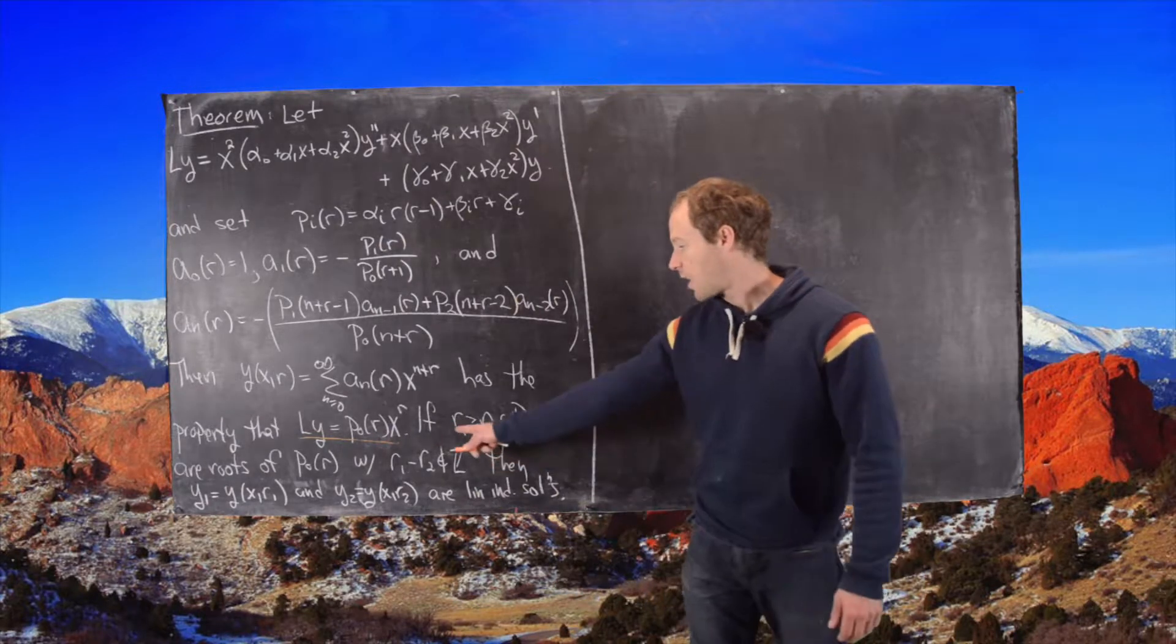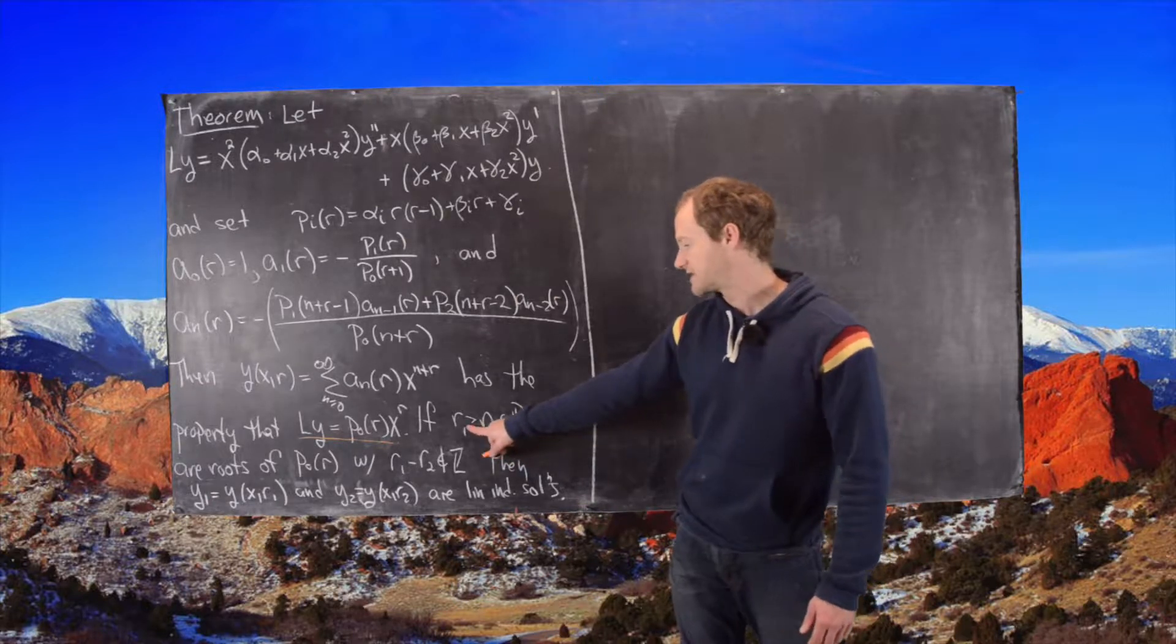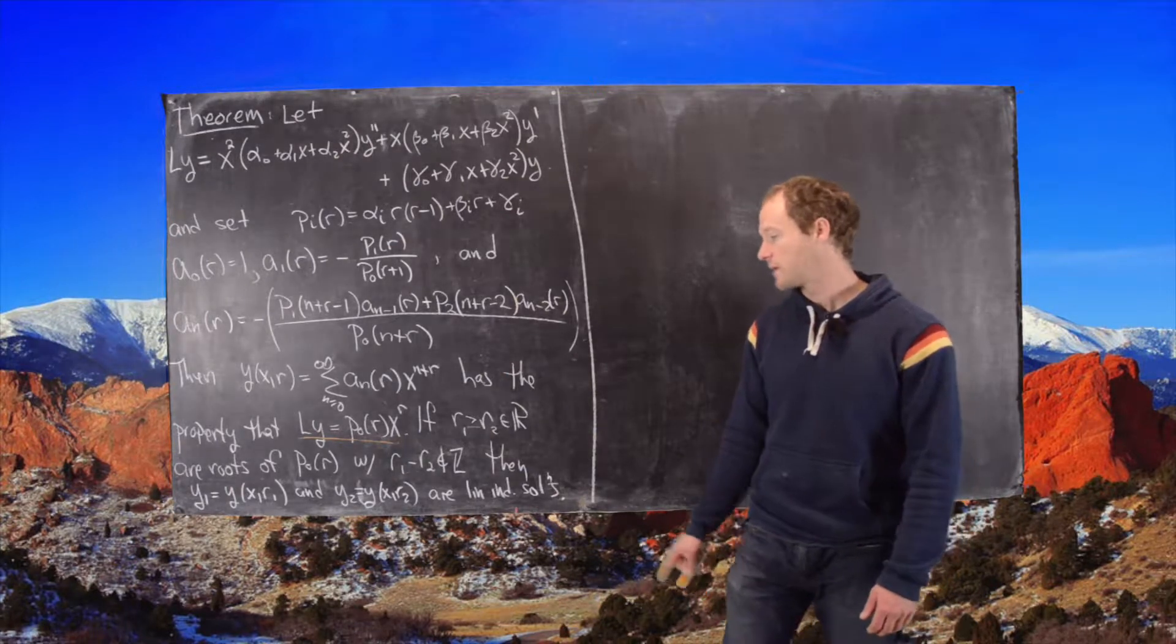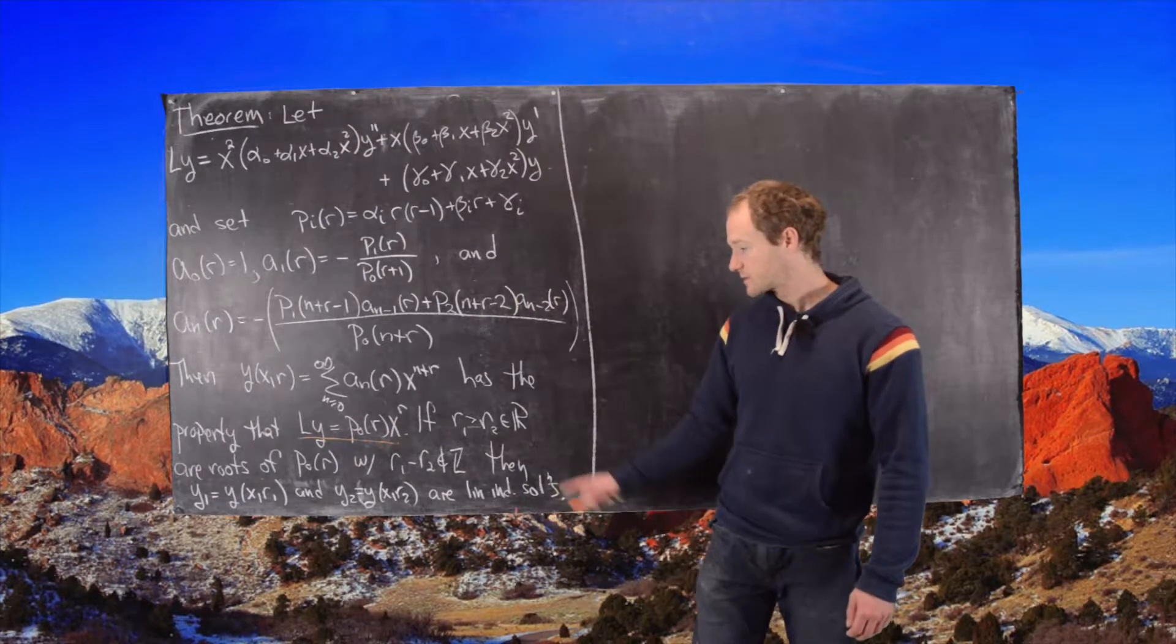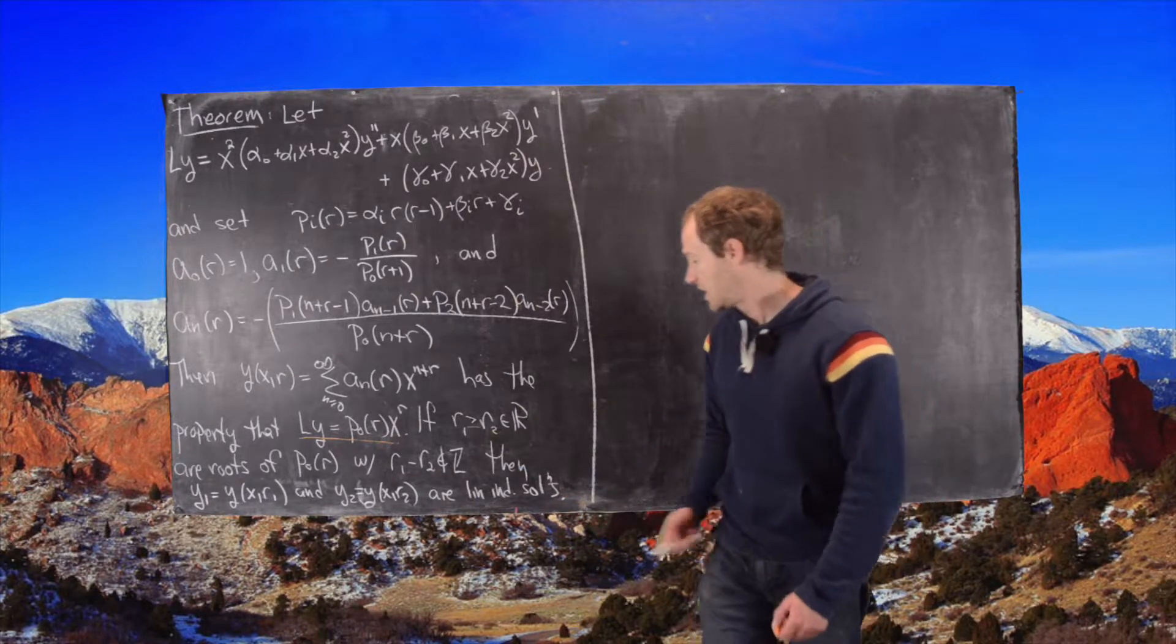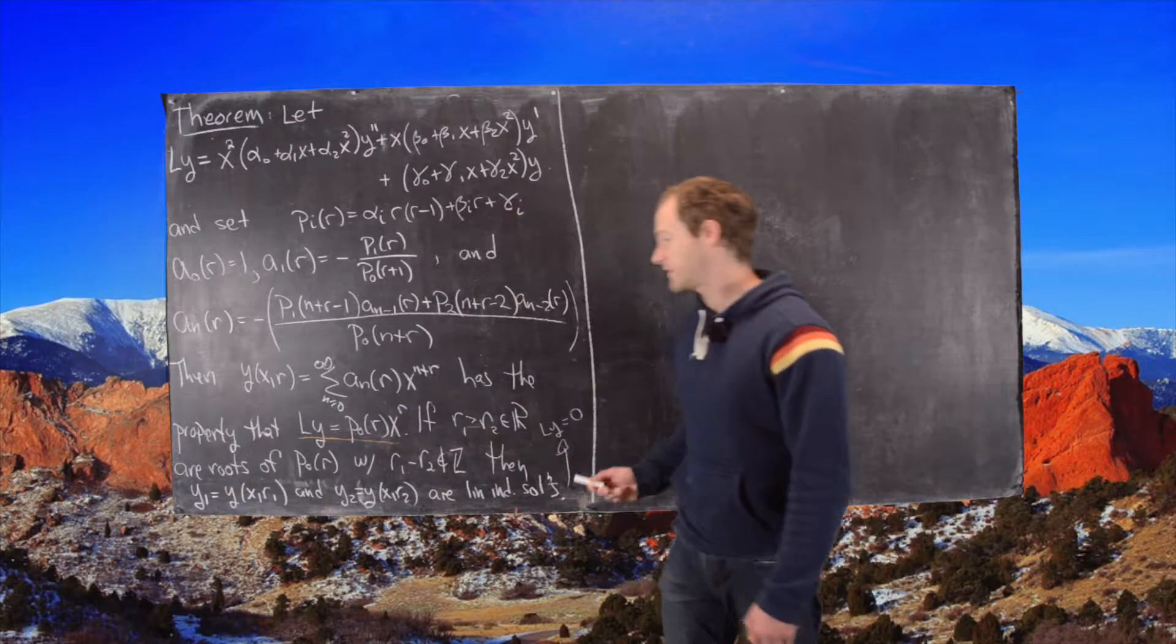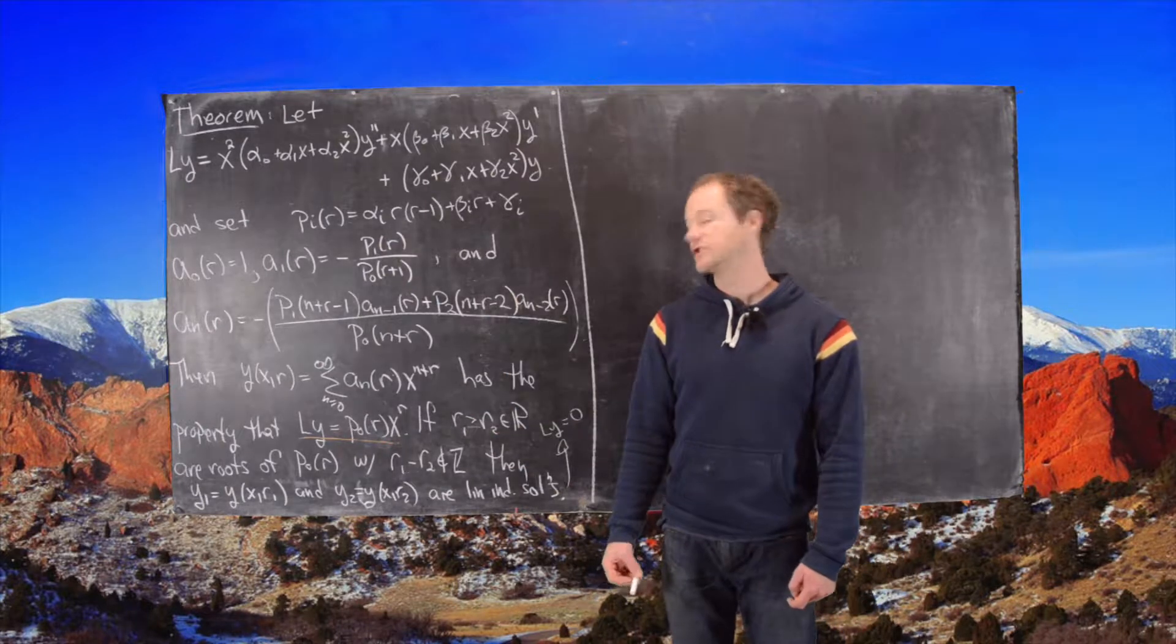And that is if r_1 is bigger than r_2 and it's a real number, and let's say those are roots of the polynomial p_0 of r, and we also have this other condition, r_1 minus r_2 is not an integer. Then we have two linearly independent solutions to this differential equation. And I should point out that this differential equation is Ly equals 0, but I ran out of room a little bit. And those two different solutions are given by these series where we set r equal to r_1 and r_2 respectively.